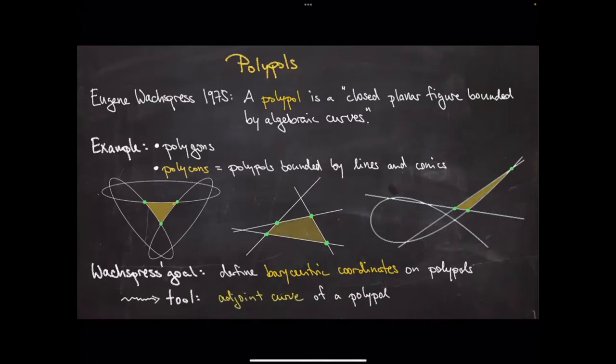Wachspress was not an algebraic geometer nor a physicist, but a geometric modeling person. He was interested in defining barycentric coordinates — coordinates you know on simplices and triangles — and wanted to define those for arbitrary polytopes and also on these curvy regions called polypoles. His central tool was the adjoint, which is the focus of this talk.